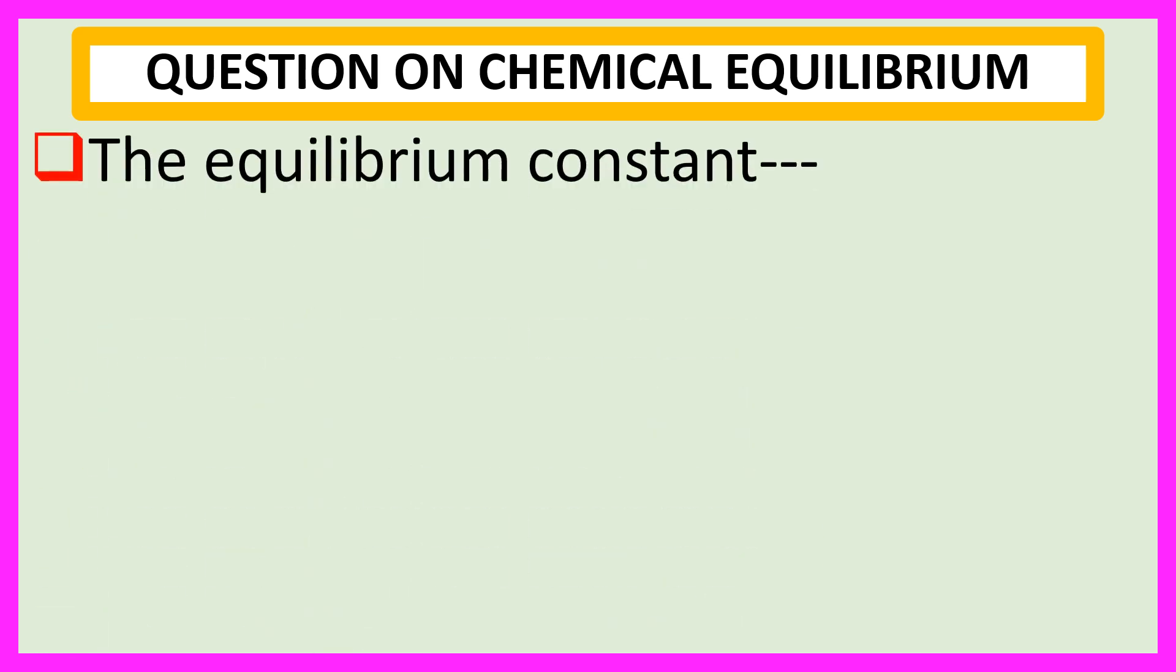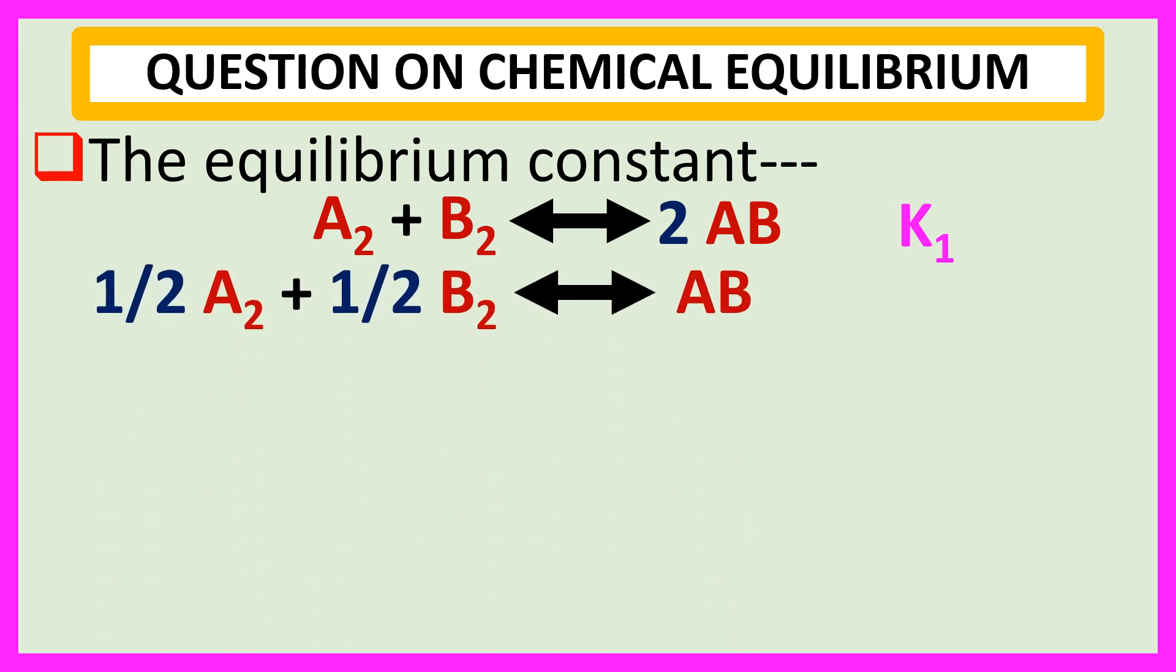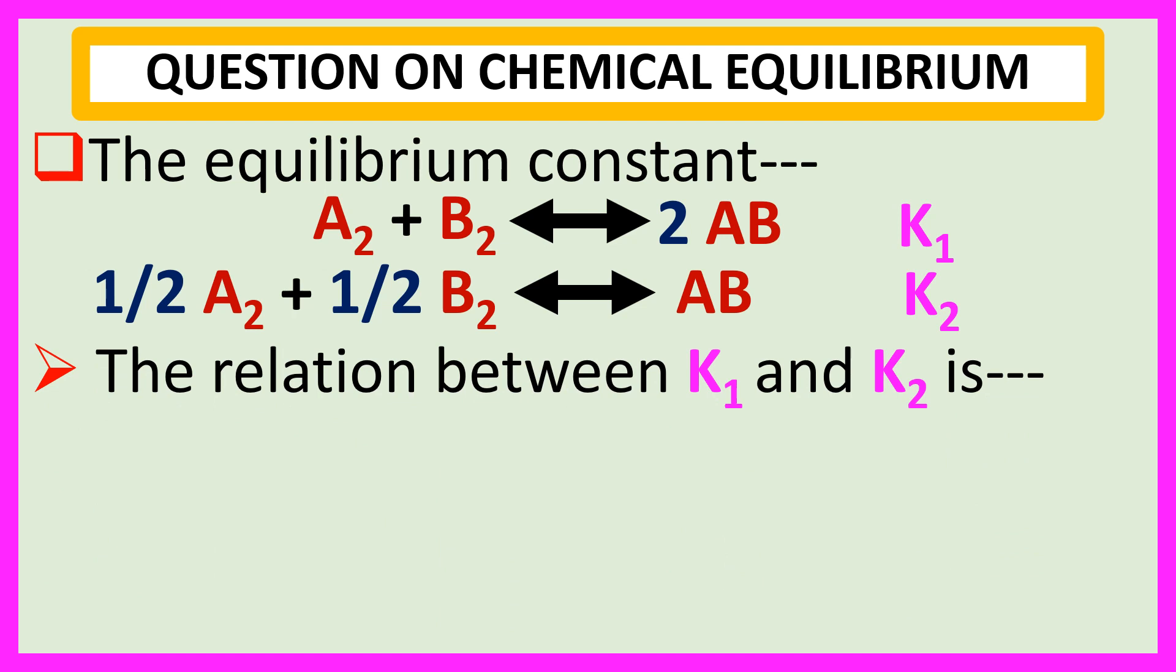The equilibrium constant for the reaction A2 plus B2 to 2AB is K1. And for the reaction half A2 plus half B2 to AB is K2. So, the relation between K1 and K2 is?